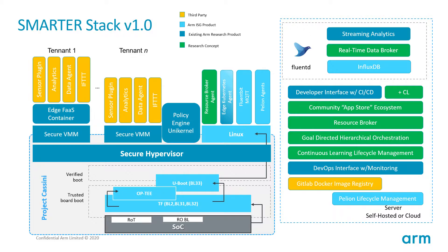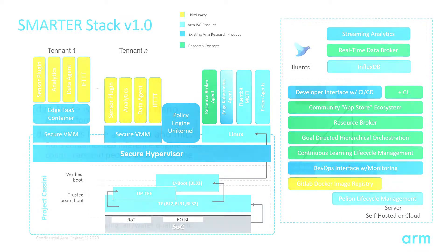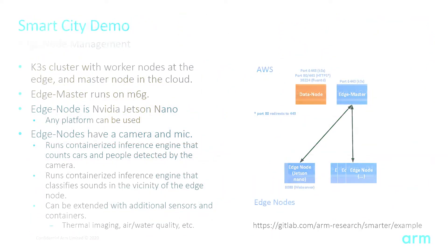On the right hand side, we see the data aggregation piece of this use case, which is either hosted in the cloud or on the 5G network. For the smart city demo, we created a K3S cluster with the primary node hosted on an AWS M6G instance. These instances are based on the ARM Neoverse platform.